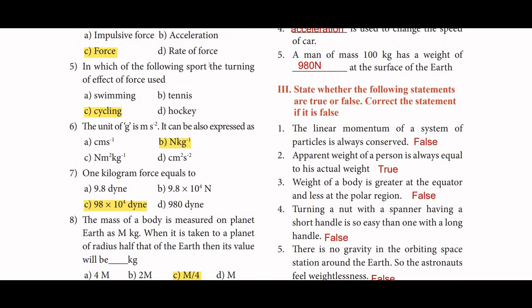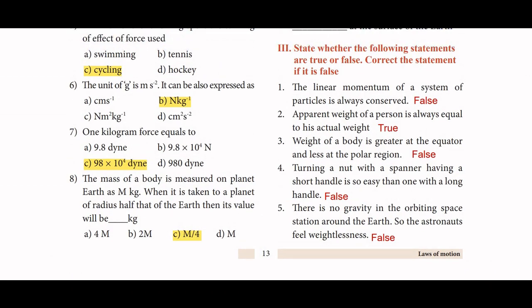Fifth: In which of the following sports is the turning effect of force used? The answer is cycling, because the wheel spins and turns the body. Sixth: Units of g are meter per second squared, which can also be expressed as Newton per kilogram. Seventh: One kilogram force equals 98 × 10⁴ dyne.